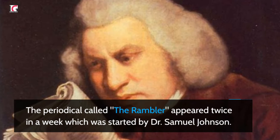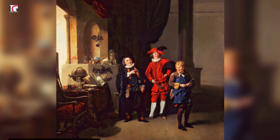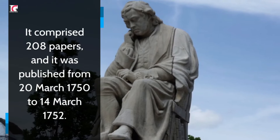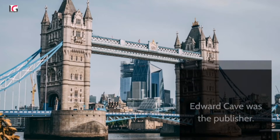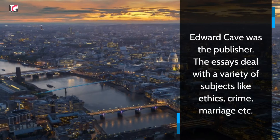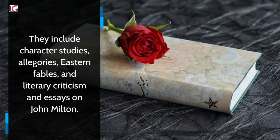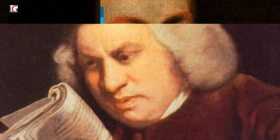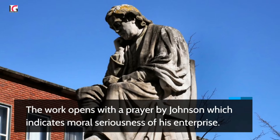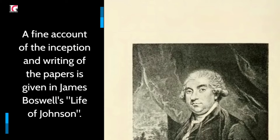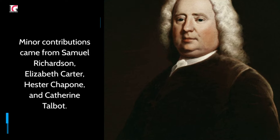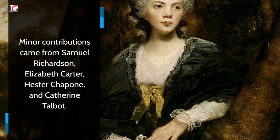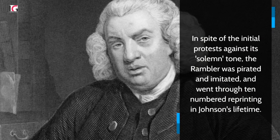The Rambler appeared twice a week, started by Dr. Samuel Johnson. It comprised 208 papers and was published from the 20th of March 1750 to the 14th of March 1752. Edward Cave was the publisher. The essays deal with a variety of subjects like ethics, crime, and marriage, and include character studies, allegories, eastern fables, and literary criticism and essays on John Milton. The work opens with a prayer by Johnson, indicating the moral seriousness of his enterprise. A fine account of the inception and writing of the papers is given in James Boswell's Life of Johnson. Minor contributions came from Samuel Richardson, Elizabeth Carter, Hester Chapone, and Catherine Talbot. In spite of initial protests against its solemn tone, The Rambler was pirated and imitated, and went through ten numbered reprintings in Johnson's lifetime.